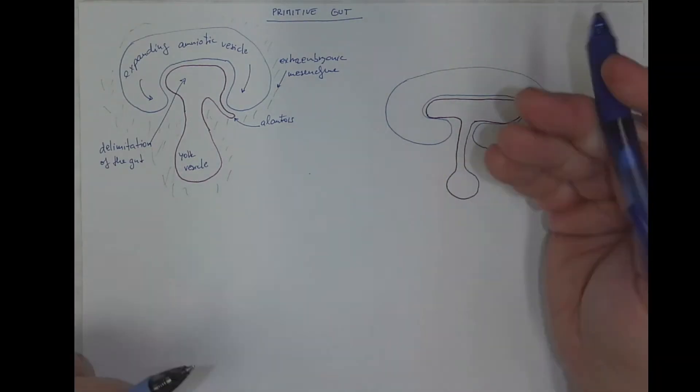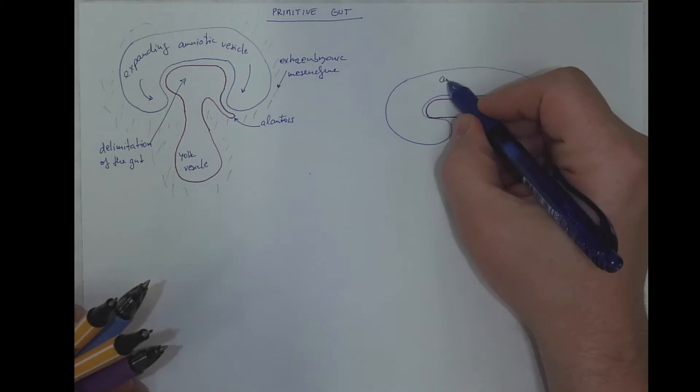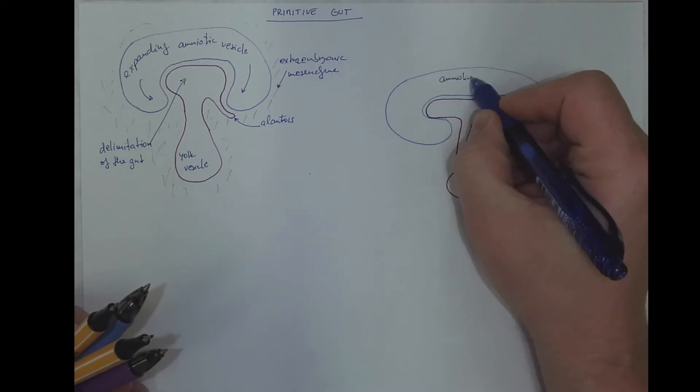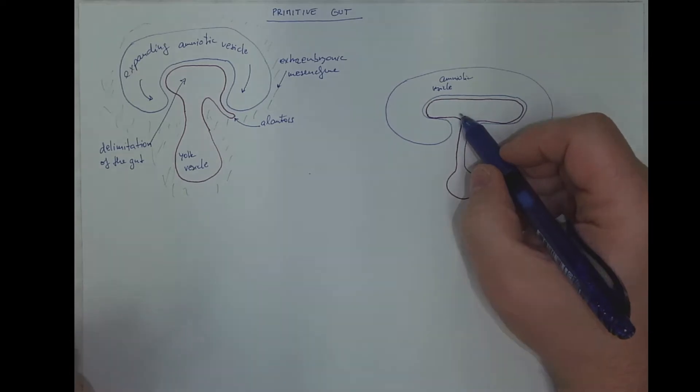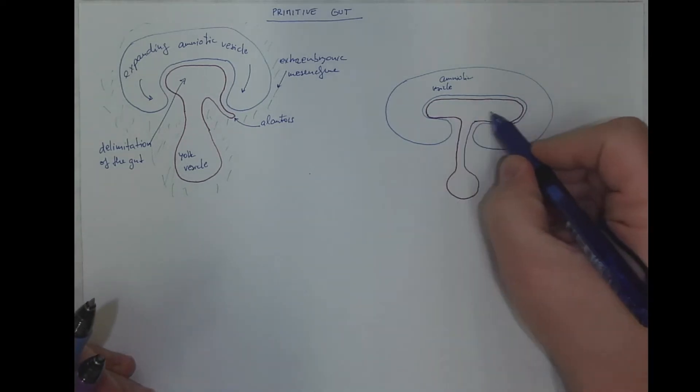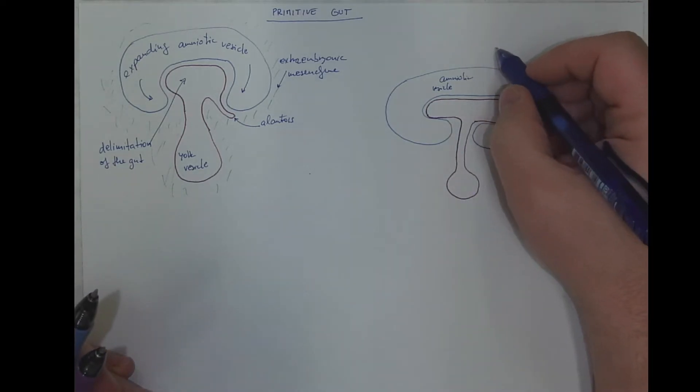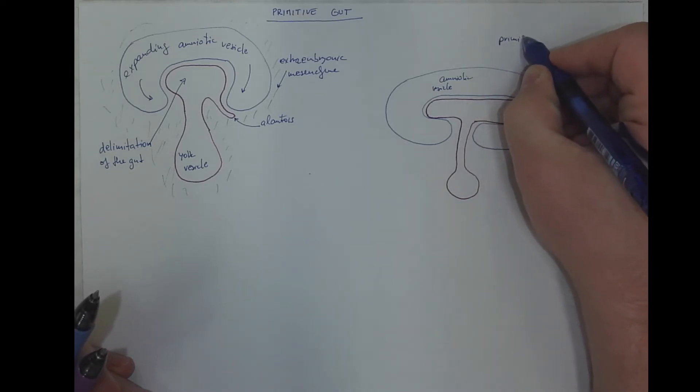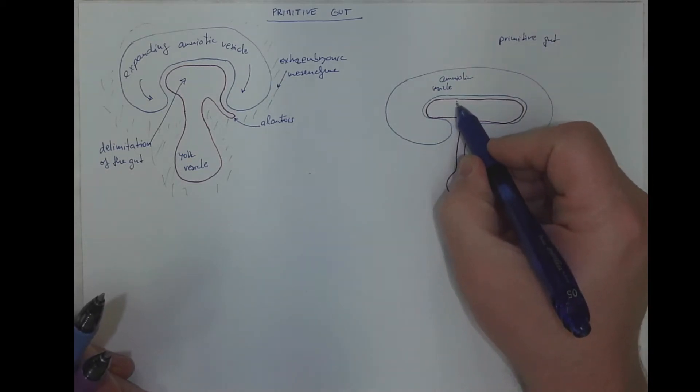Let's label it the amniotic vesicle. And now, this is the primitive gut, the primitive gut tube. And we will distinguish three parts.